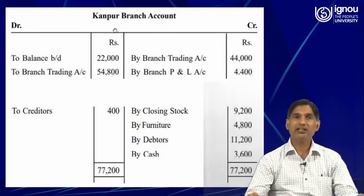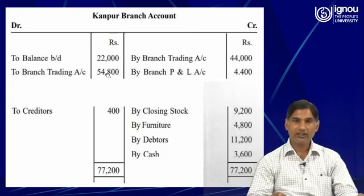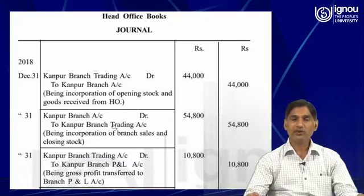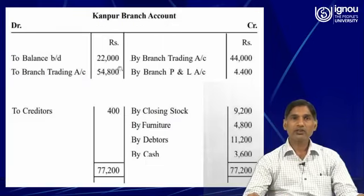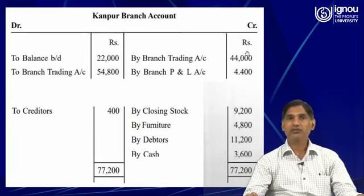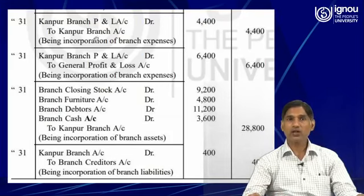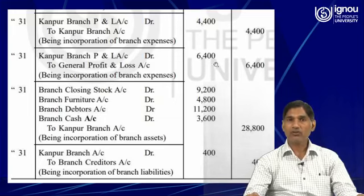Now we can make the journal entries. Kanpur branch balance is given in the trial balance as 22,000, and the trading account is 54,800 — we have already made an entry for 54,800, which pertains to sales and closing stock. Branch trading at 44,000 is the amount reflecting opening stock and goods received. The net profit is 4,400 — being incorporation of branch expenses — and the general profit is rupees 6,400.